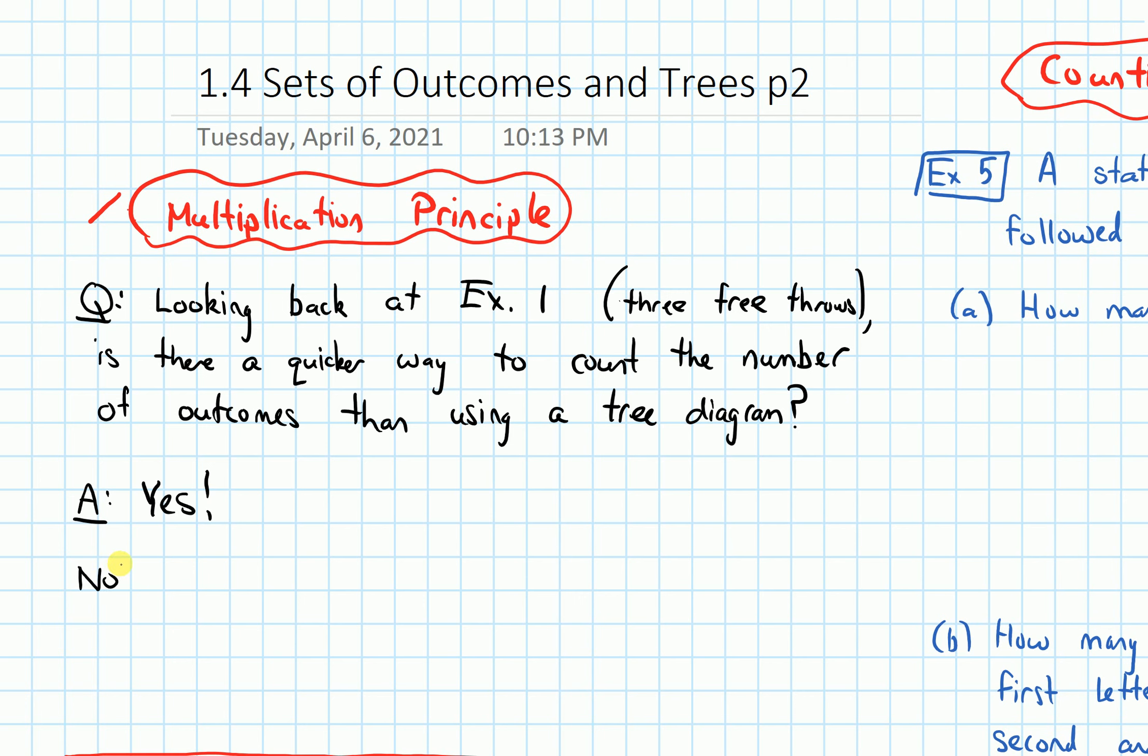And the key thing that I want to observe is, if we want to count the total number of outcomes here, what we essentially end up doing is we consider each of the free throws individually. So I can think about the number of outcomes first in free throw one.